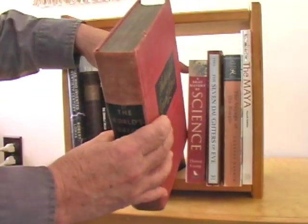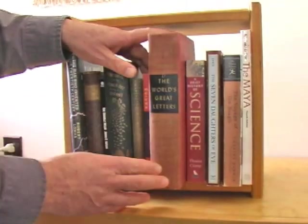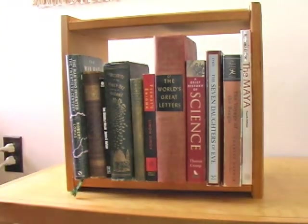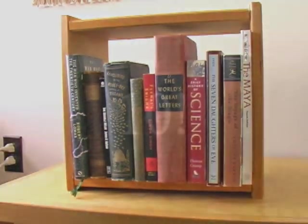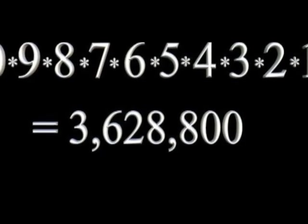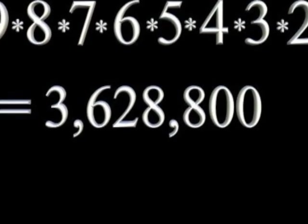The answer is surprising. Let's calculate. We have ten different books, so ten factorial will give us the number of possible arrangements — ten times nine times eight and so on. Multiplying, we get an astounding three million, six hundred and twenty-eight thousand, eight hundred possible arrangements.